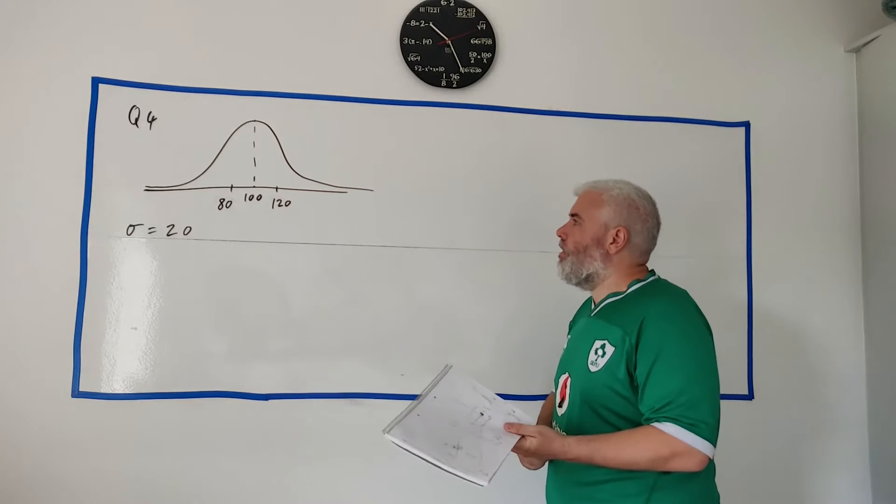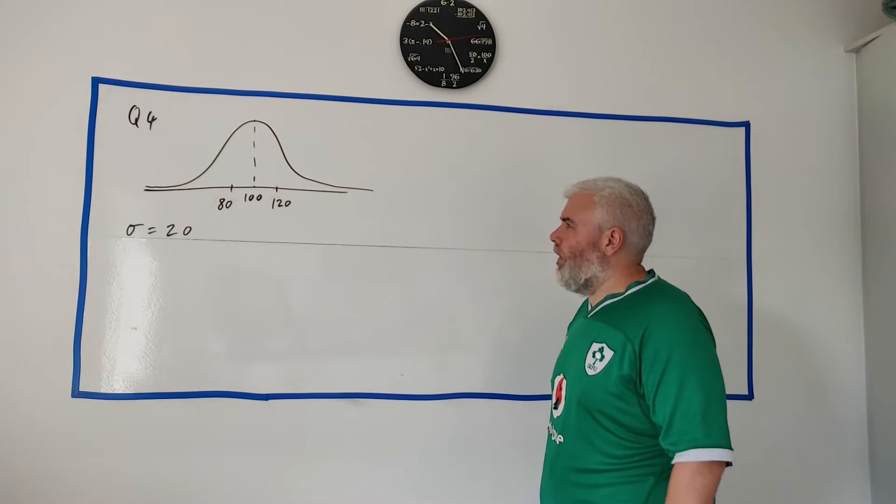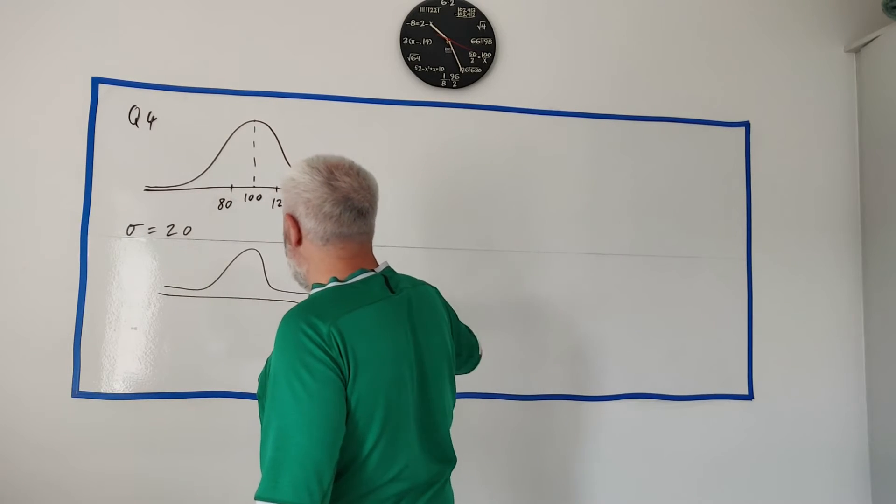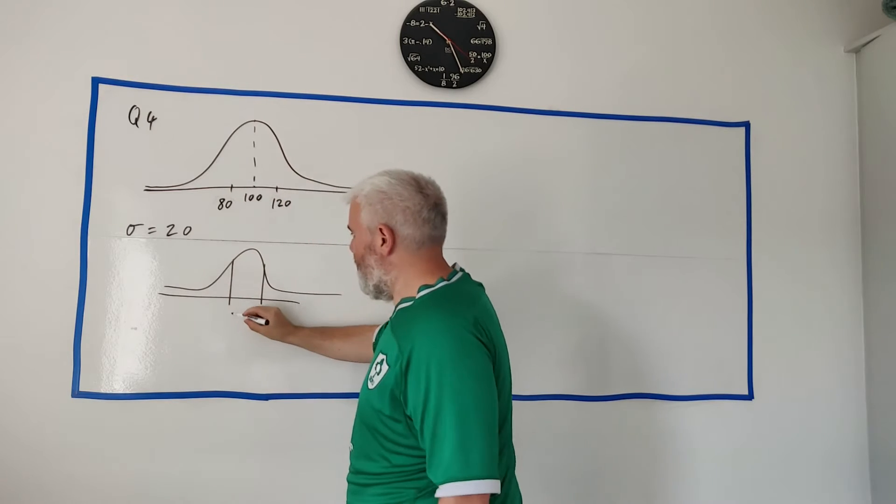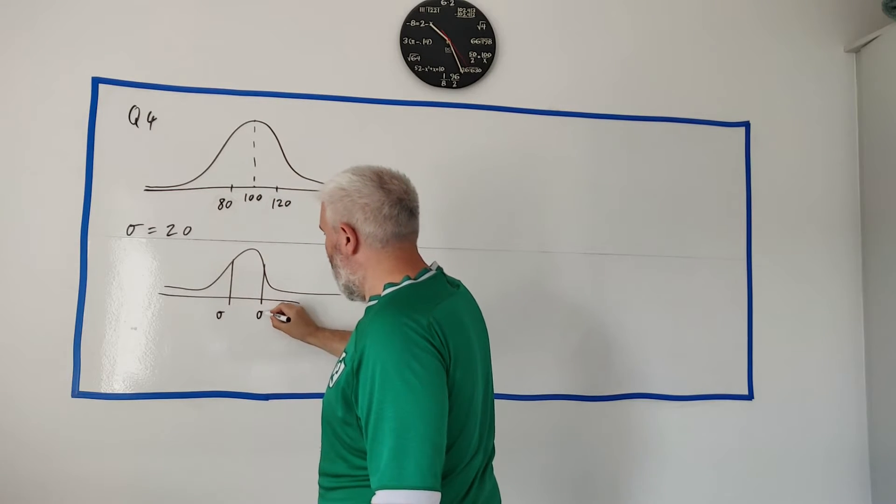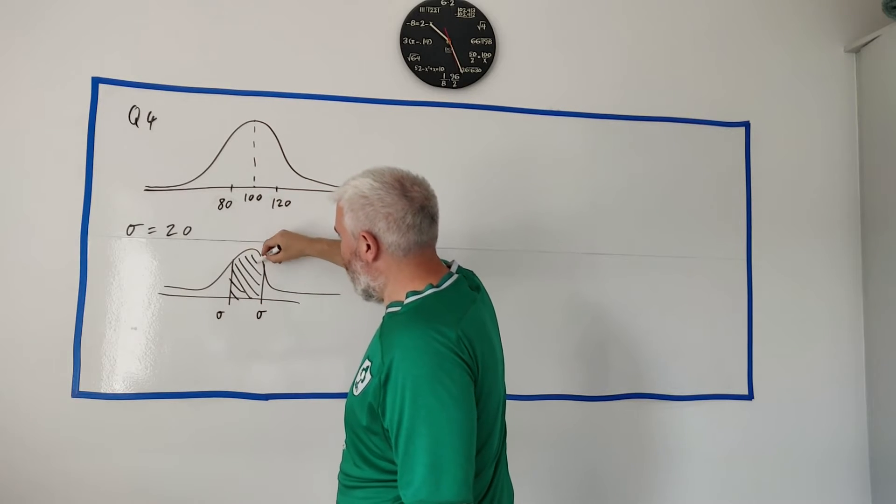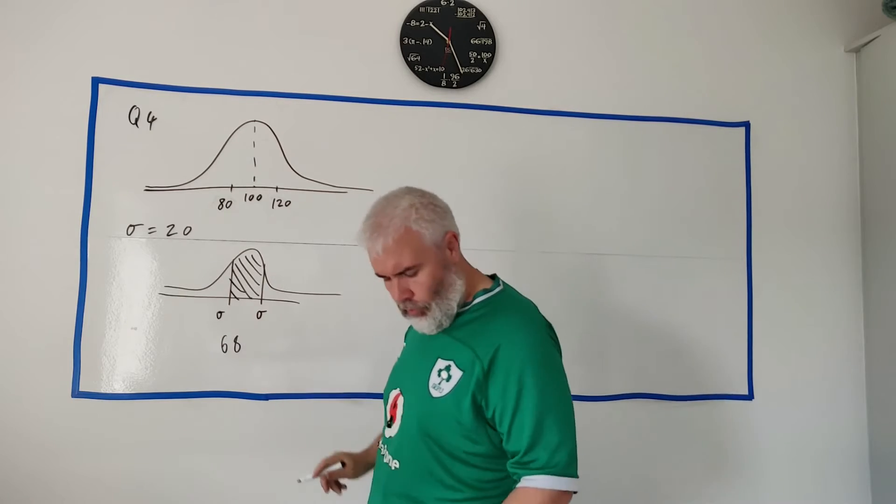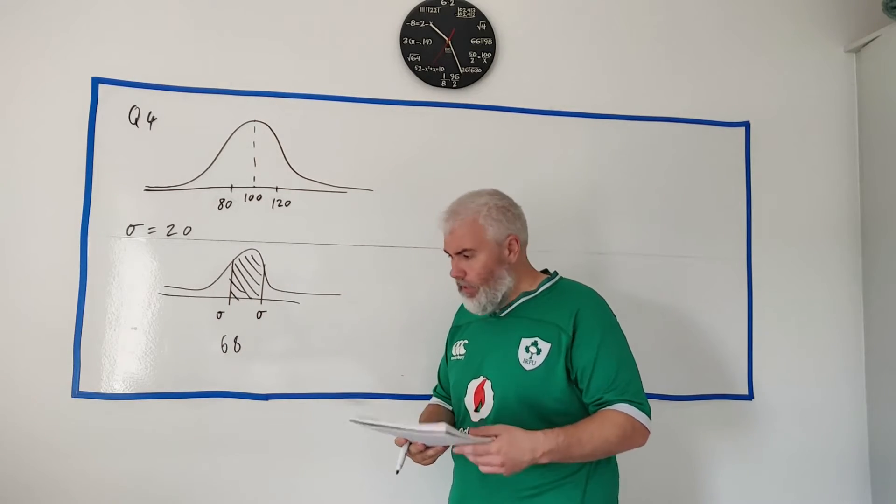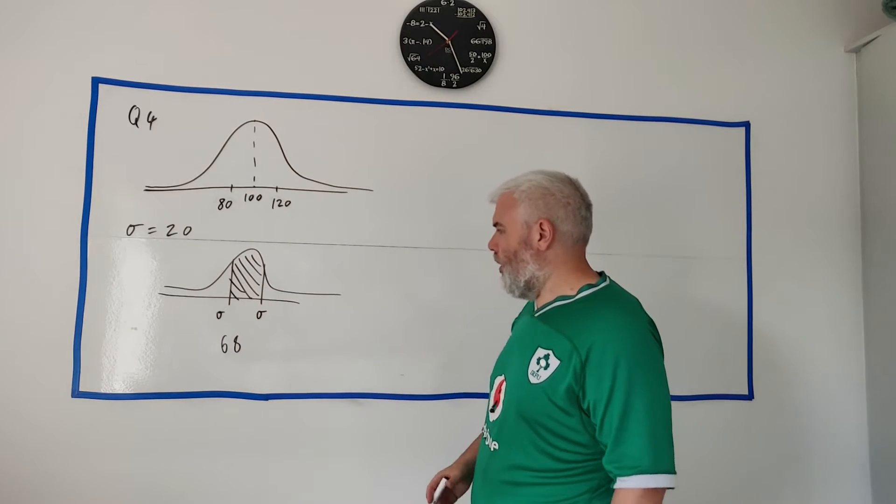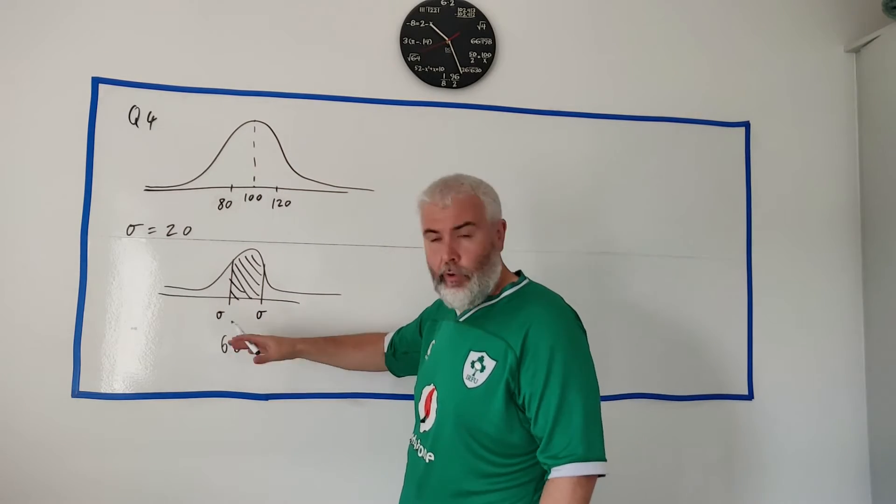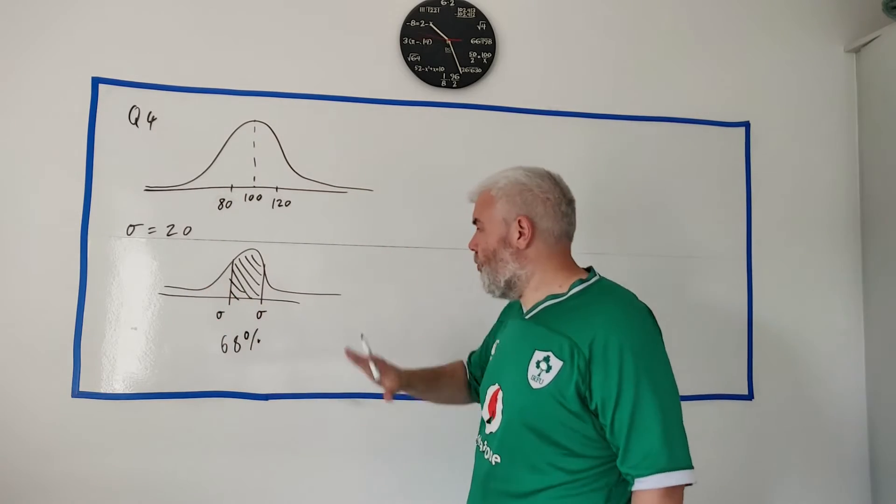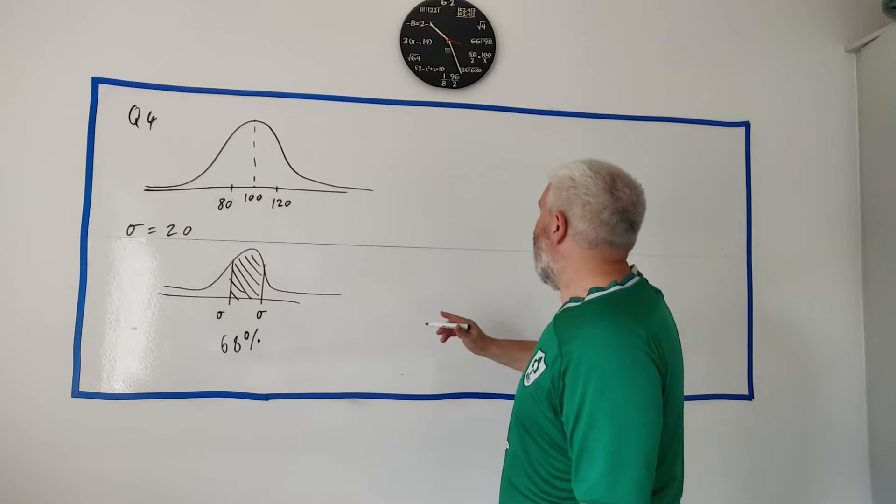So it's called the empirical rule and you're asked to sort of memorise that when you're between one standard deviation, how many people are in the middle between one standard deviation and that number is 68. The real number, you can look it up in the formula book, but it's something like 68.1 something. You get a lot more exact, but roughly 68%. And ordinary student you're expected to memorise this number.